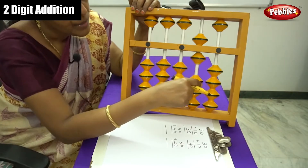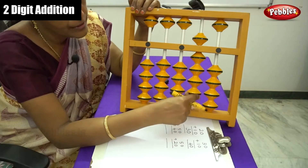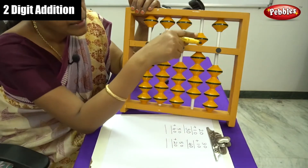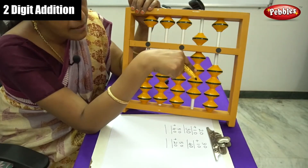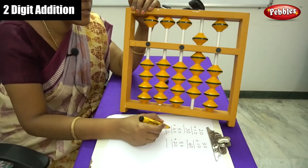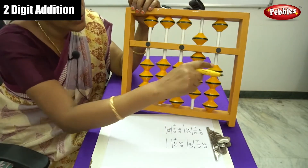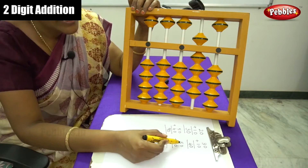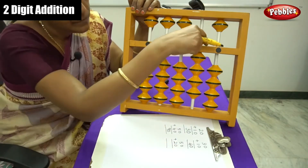Count: 10, 20, 30, 40. Now calculate all the beads: 50, 60, 70, 80, 90. The answer is 90. Next sum is 50 plus 20.